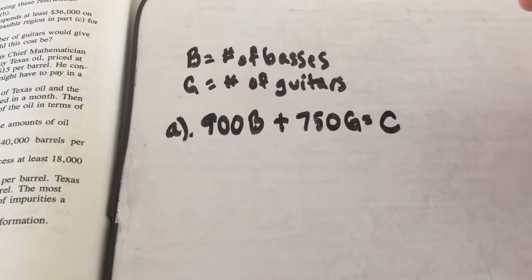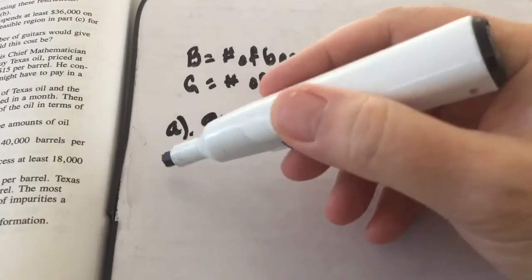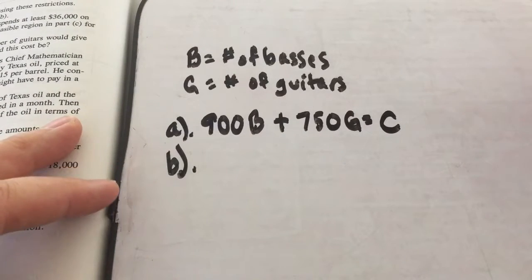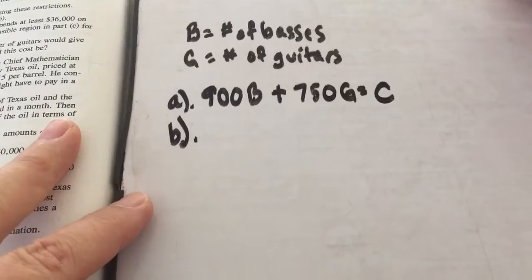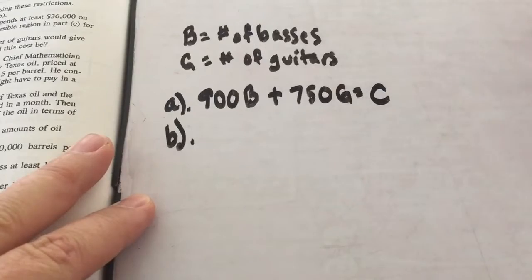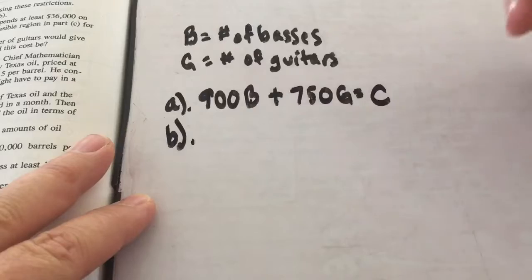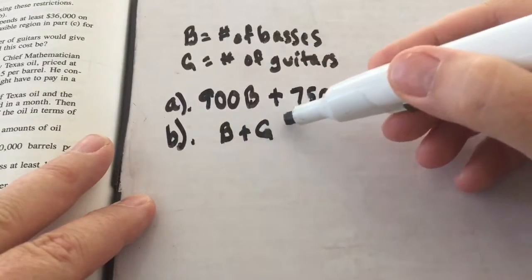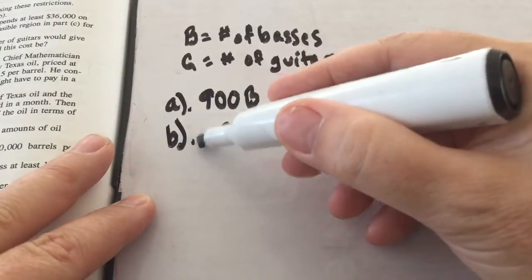Part A asks us to write an equation for the total dollars C he will pay. Then part B gives us more information with constraints I, II, and III. Jake has certain restrictions on the number of each kind of instrument he can stock. His store is small, so he can buy no more than 50 instruments total — the number of basses plus the number of guitars must be less than or equal to 50. That's constraint I.